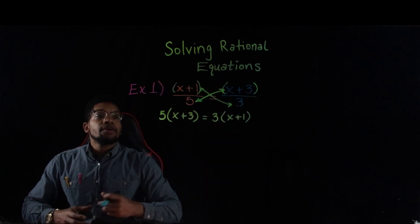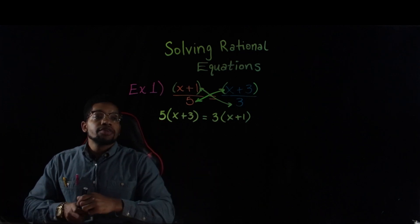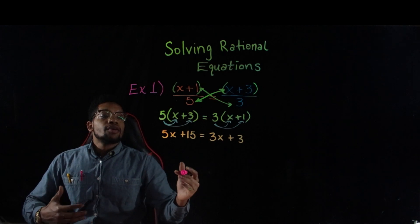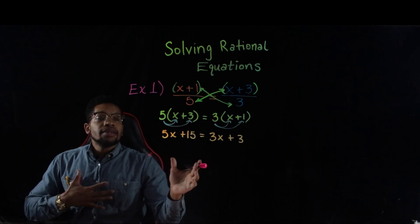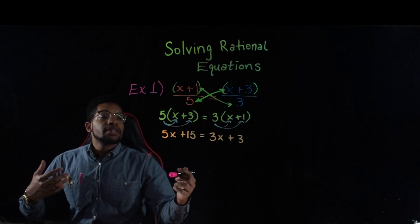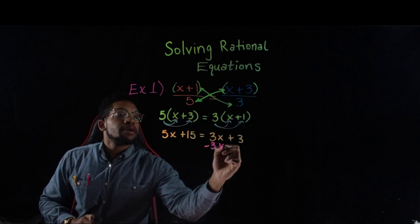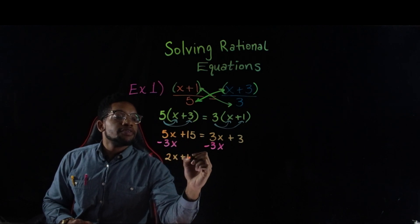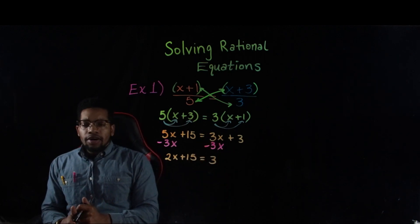Before we do anything else, I notice that I have some coefficient or some number outside of my parentheses, so I'm going to go ahead and distribute that first. Now that I've distributed, the one thing I notice is that I have an x on both sides. So, obviously we're going to have to either move the 3x to the left, or move the 5x to the right. Whenever I do this, I personally don't like to deal with negatives, so I'm just going to move whatever is not going to make me deal with negatives. So in this case, I'm going to subtract 3x from both sides, and then it's going to make my 3x's on the right cancel out. We just combine like terms, so that'll be 5x minus 3x, 2x plus 15 is going to equal 3. Now that those 3x's have canceled out, and then from here on out, it's just a two-step equation.